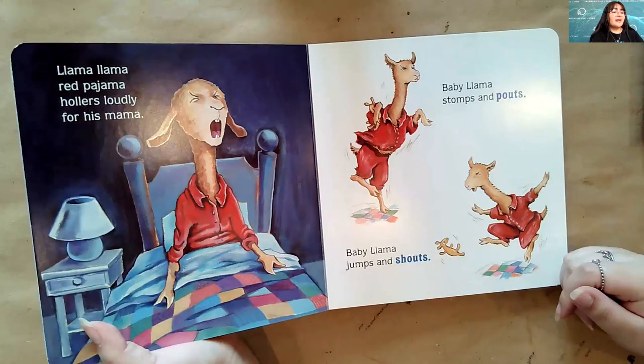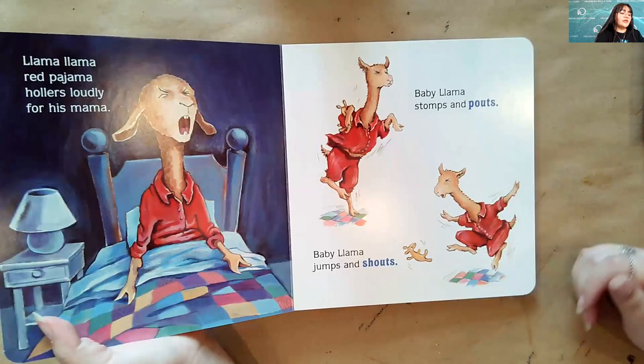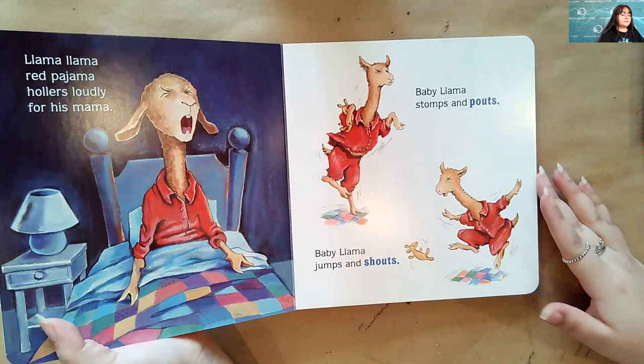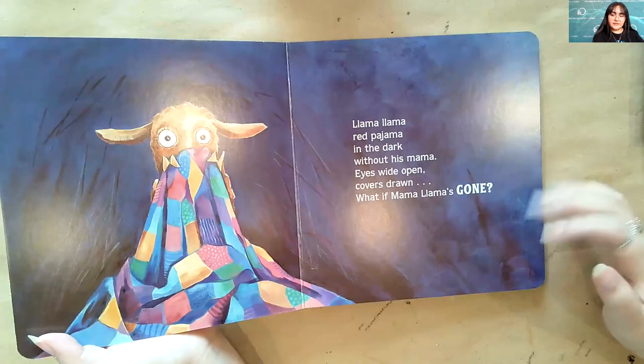Llama Llama Red Pajama listens quiet for his mama. What is Mama Llama doing? Baby Llama starts boohooing. Llama Llama Red Pajama hollers loudly for his mama. Baby Llama stomps and pouts. Baby Llama jumps and shouts. Oh no, Baby Llama seems to be jumping on the bed. We know you're not supposed to do that.